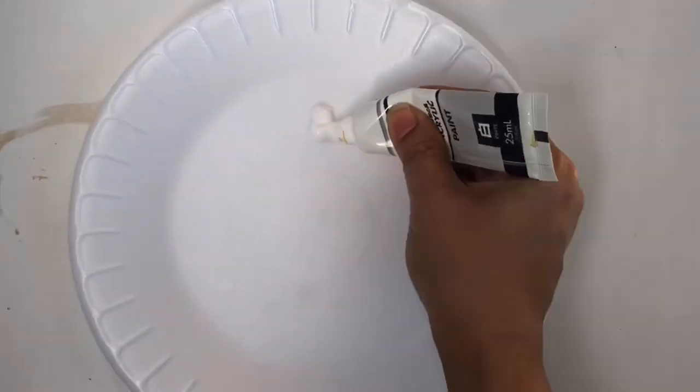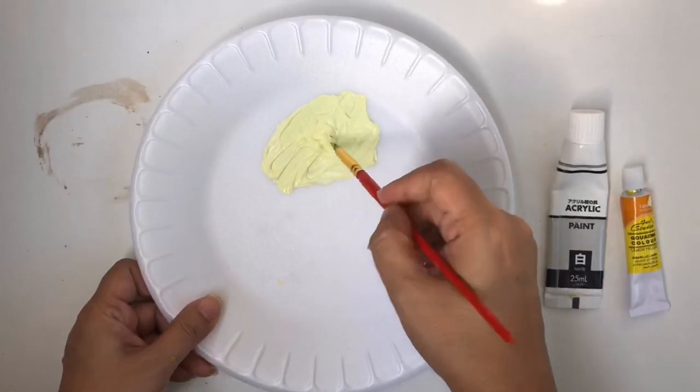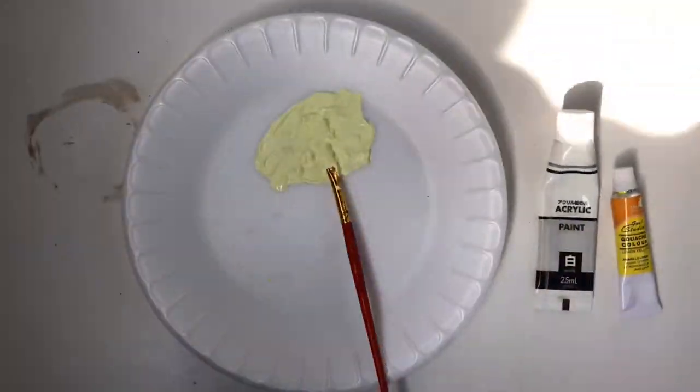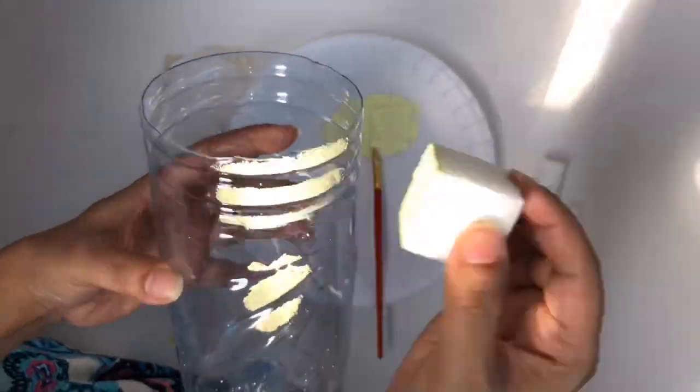Next, mix some white and yellow paint to create our light yellow base color. Mix it up and use a sponge to apply it onto the plastic bottle.